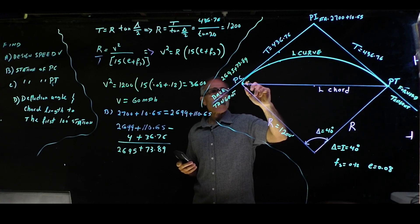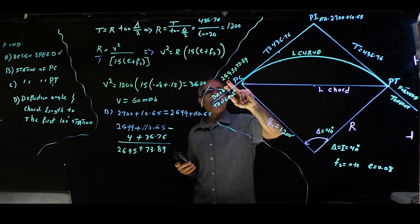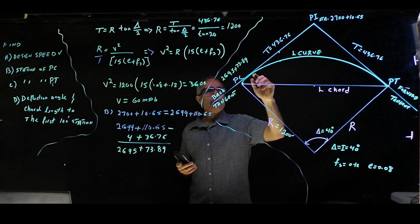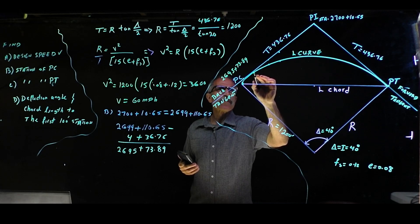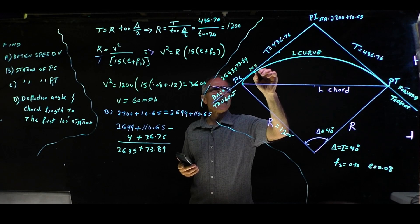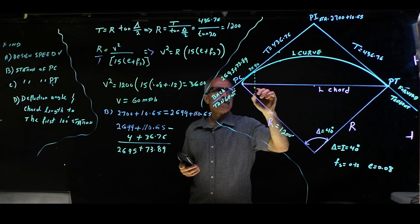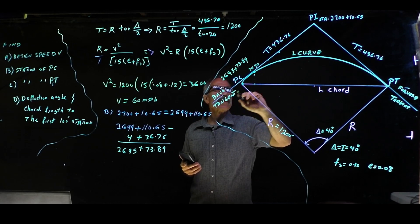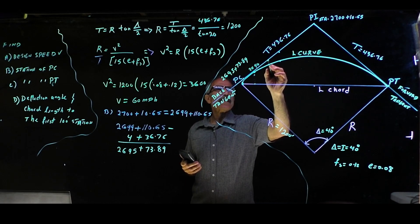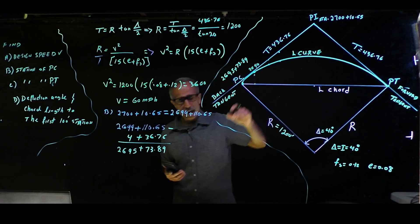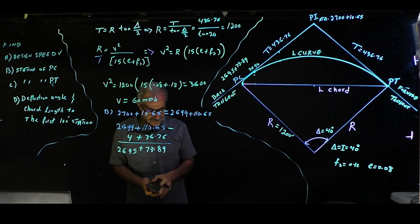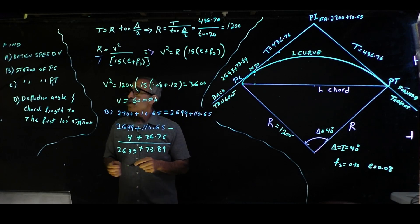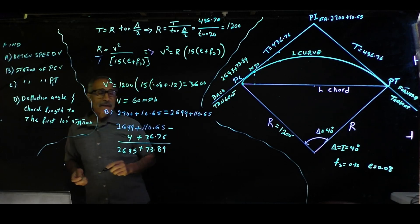The PC station works out to 2695 plus 73.89. The next even 100-foot station from PC will be 2696, which coincides with a station along the curve. Then the next station would be 2697, and so on, each 100 feet apart through the curve.